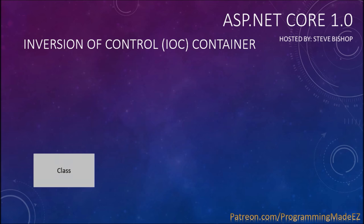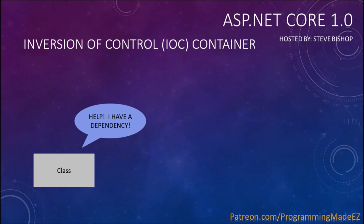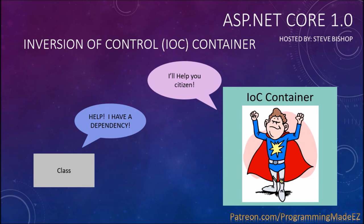Let's say you have some sort of class out there and that class has some sort of dependency that it needs injected into it in order for it to operate. So our class yells out to the ASP.NET Framework, 'Help! I have a dependency!' Well, the ASP.NET Core Framework will respond back with an IOC container.